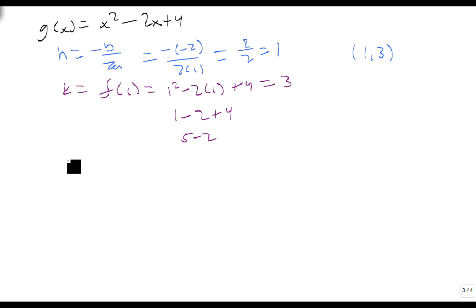Our y-intercept is f of 0, which is 0 squared minus 2 times 0 plus 4, and again we can just jump straight to (0, 4) because all we get is the constant.